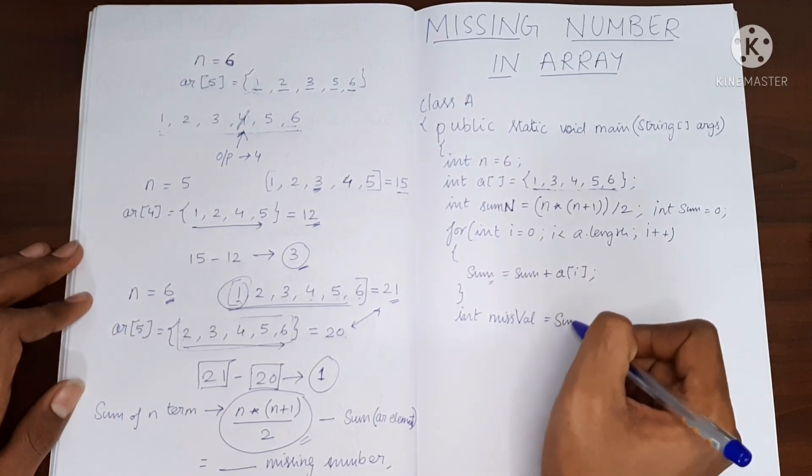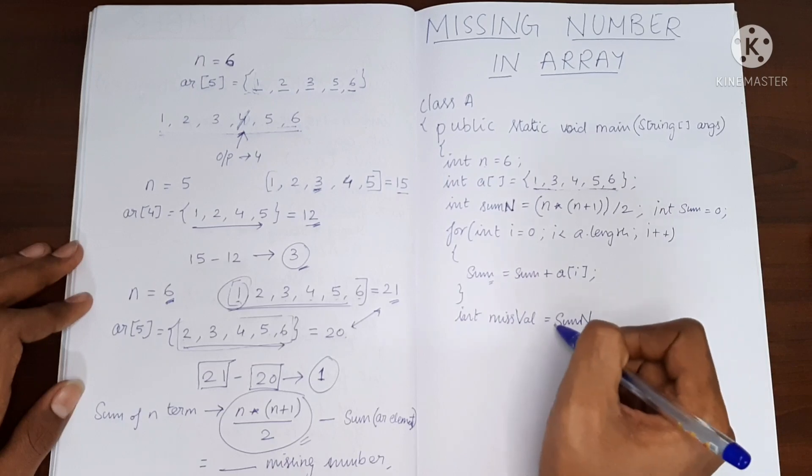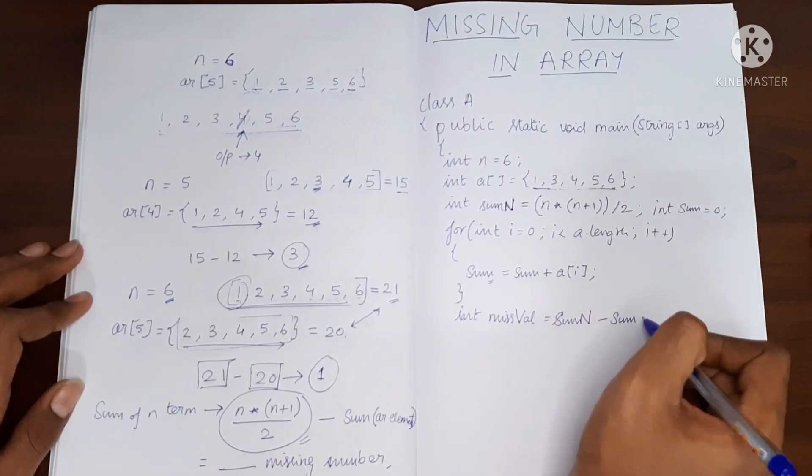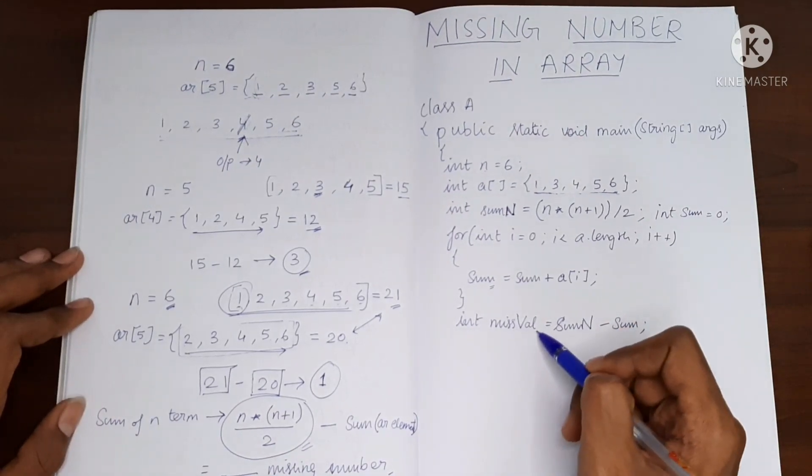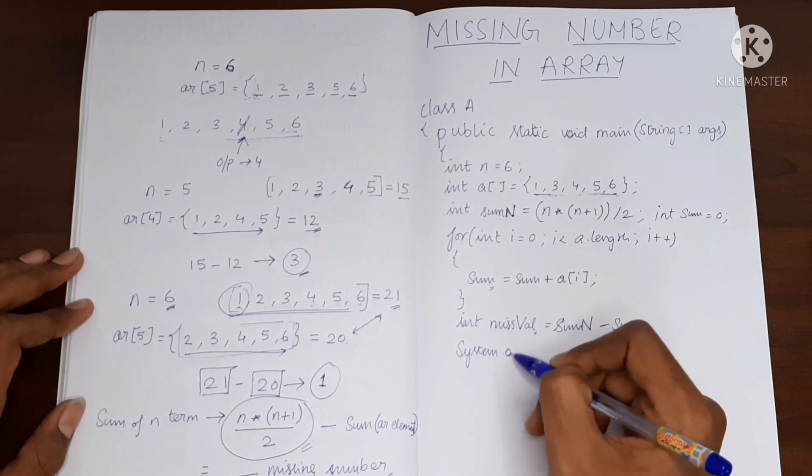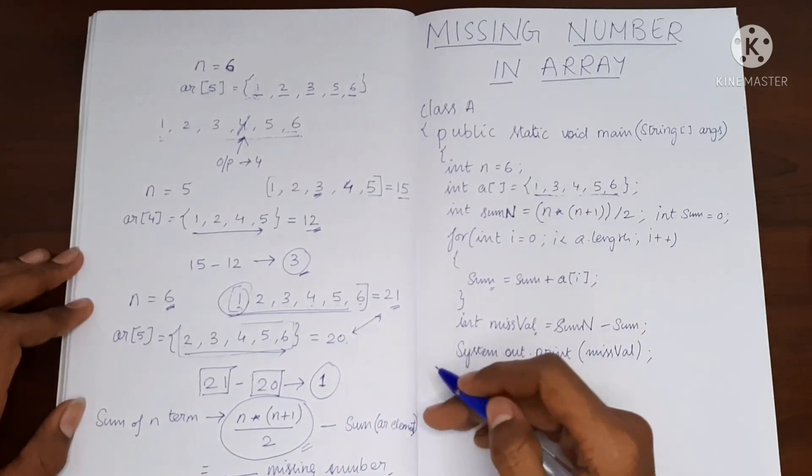And it will be the sum of n minus sum. And now this will have the missing value and let's just print it. So that's all.